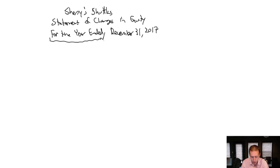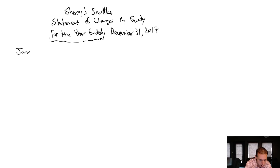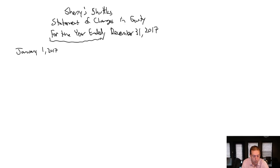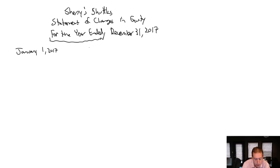So, our statement of changes in shareholders' equity — we say, what did we have for shareholders' equity at the beginning of the year? If it ends on December 31st, it began on January 1st. Of course, we could have fiscal years that don't match the calendar — a year that begins on March 1st and ends on February 28th the next year, or fiscal years that begin on January 8th and end on January 7th. Fiscal years don't have to align to calendar months, but this one does, which makes it easier when learning.